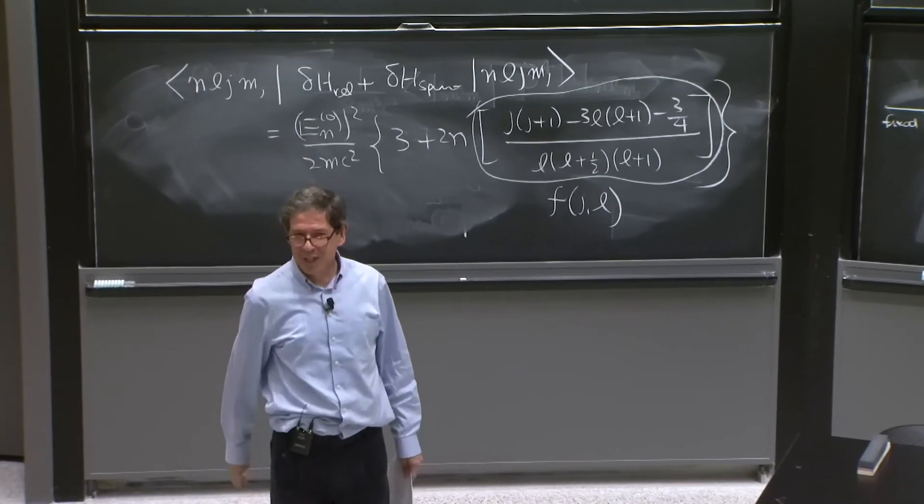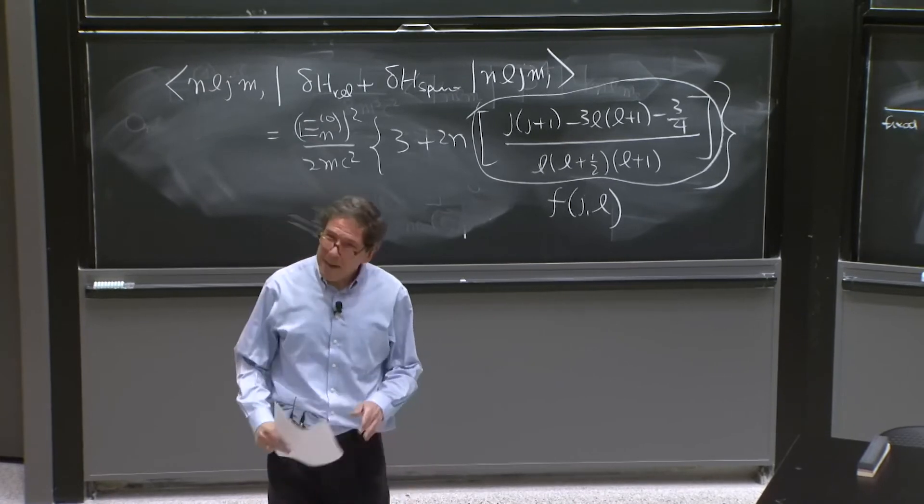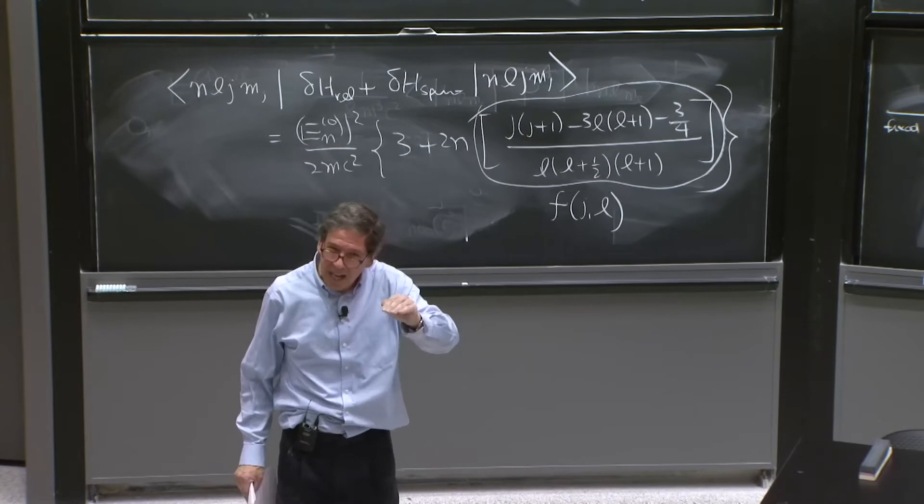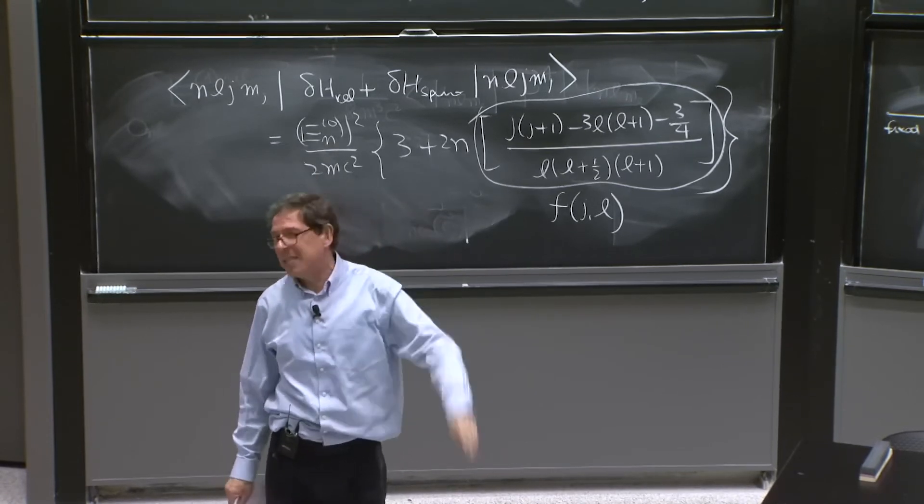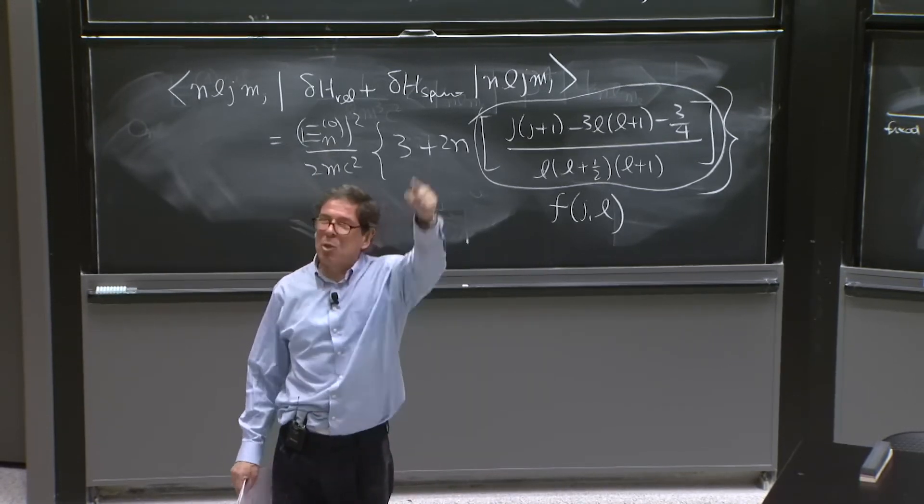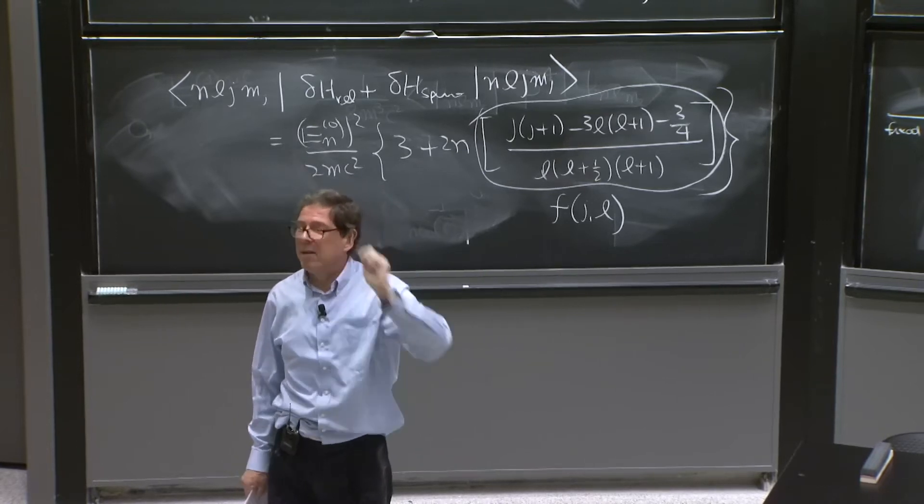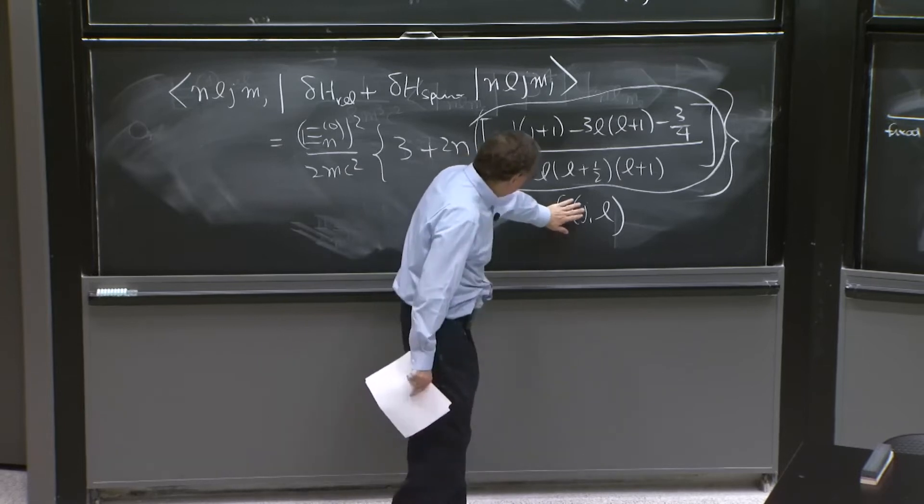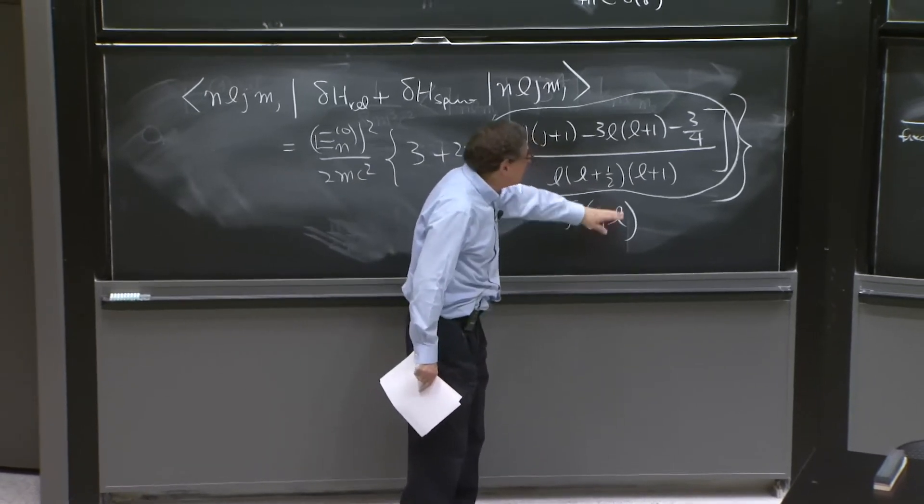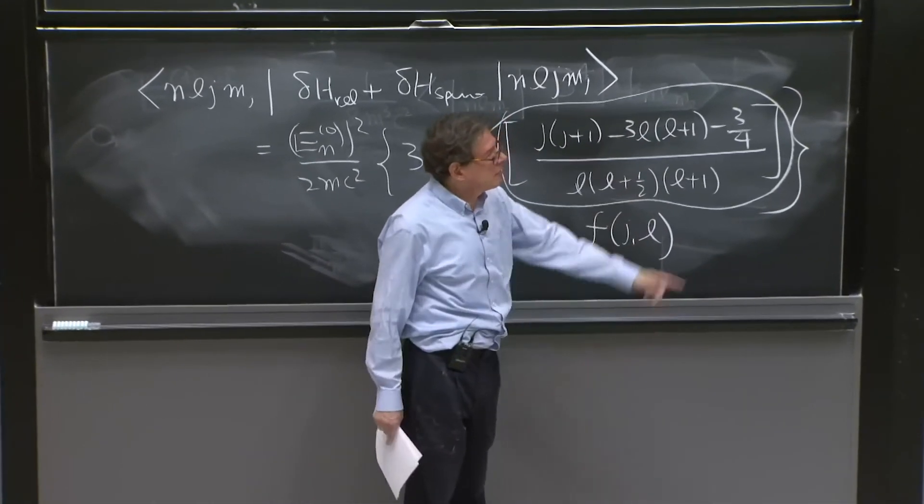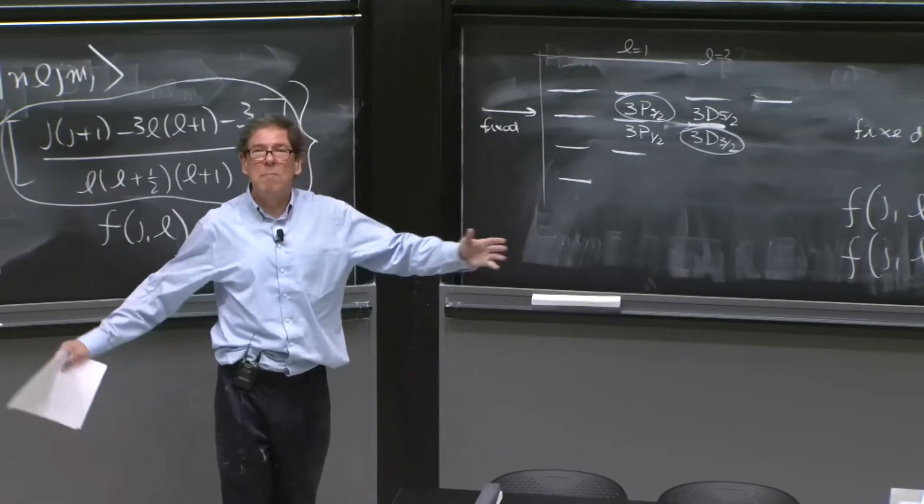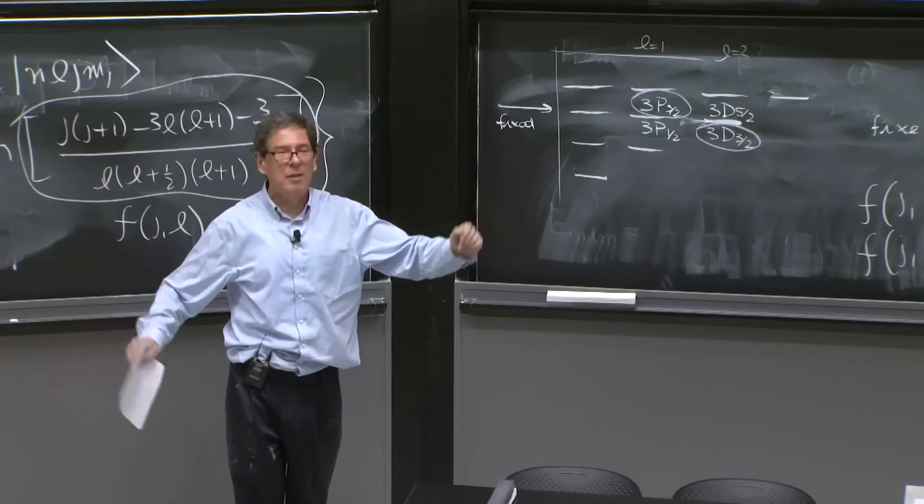It's a little strange. There's no l dependence, because given j, l can be two values. And for those two values, that function gives you the same. It's one of those. Like x squared gives the same for 1 and minus 1. This function can, once you fix j, l can be two values. And it so happens that these two values give the same. So at the end of the day, this just depends on j. That's the most important result of this lecture.